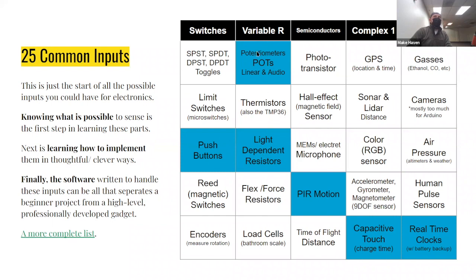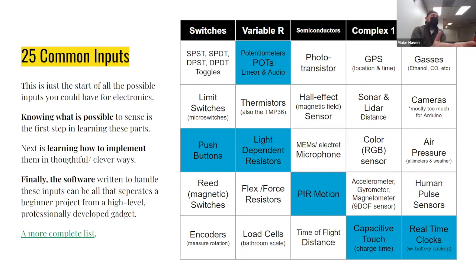Potentiometers are like a knob on a guitar for changing audio levels — there are linear (type B) and audio logarithmic (type A) versions, both important if you're into audio. Thermistors or temperature sensors change their resistance based on temperature. Light dependent resistors (LDRs) are cheap devices that measure light in a room. There are also photo transistors — a few different types of devices in this category — and flex or force resistors that change based on pressure or pull.